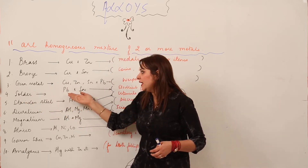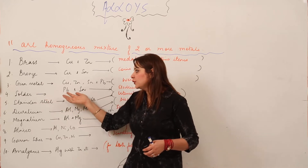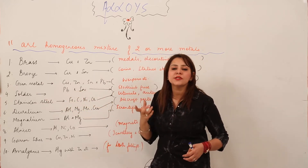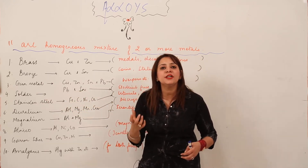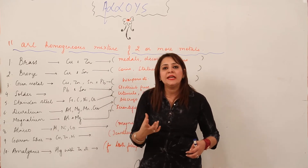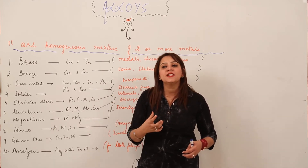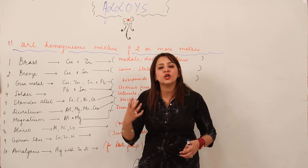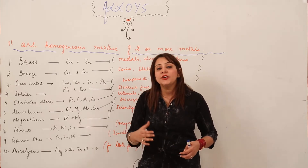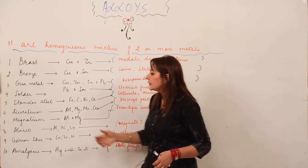Next is solder, which is an alloy of lead and tin. Solder is used for making electrical fuses used in houses to prevent fire, short circuiting, and overloading.